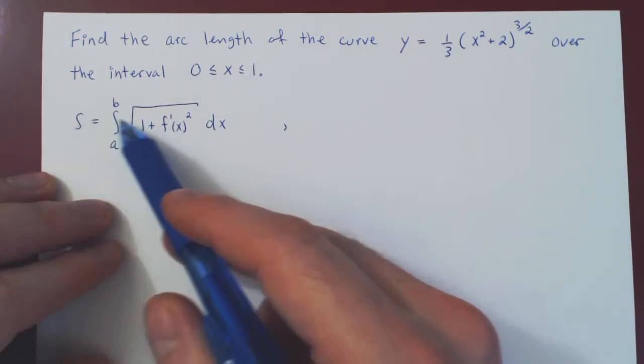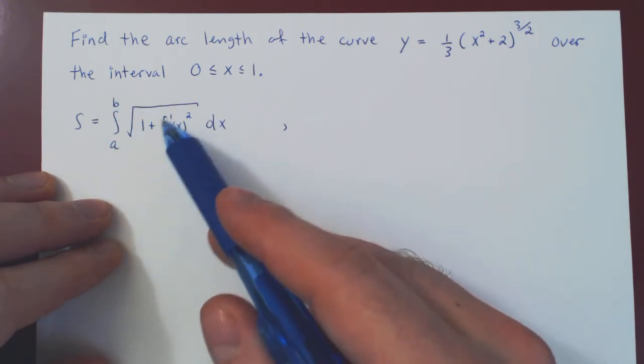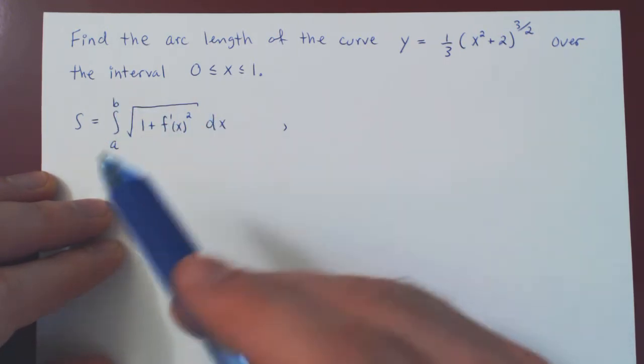Here's the formula for the arc length of a given curve from a to b for the function f of x that we derived in our previous video.